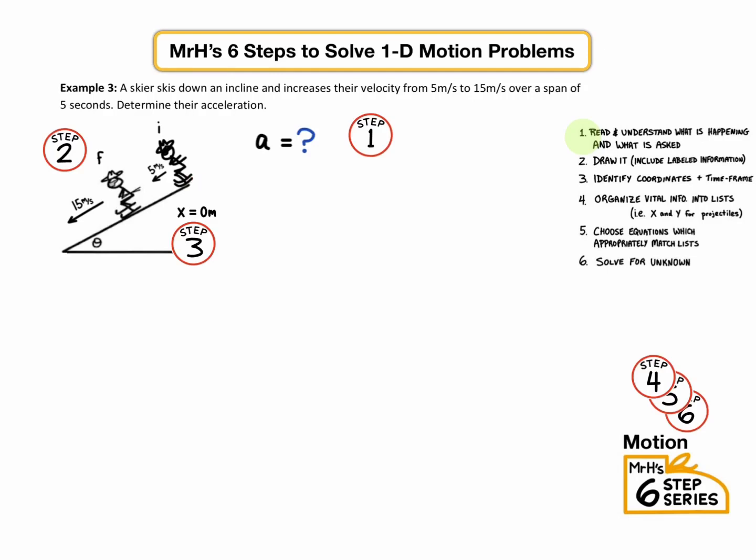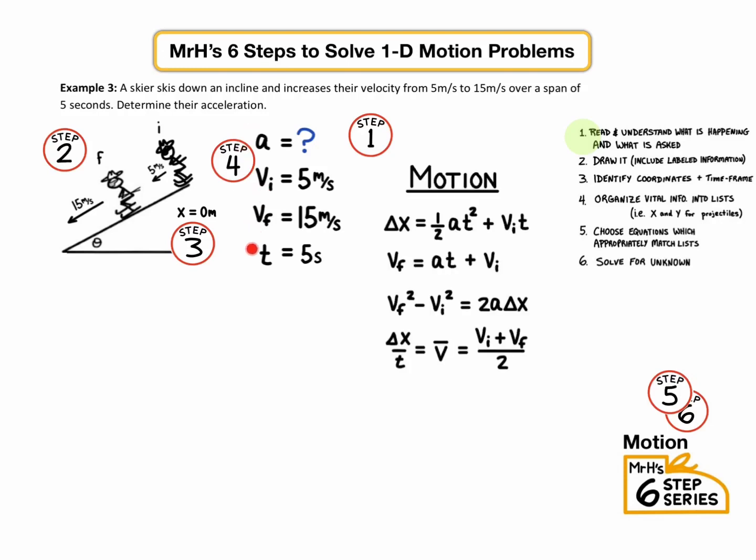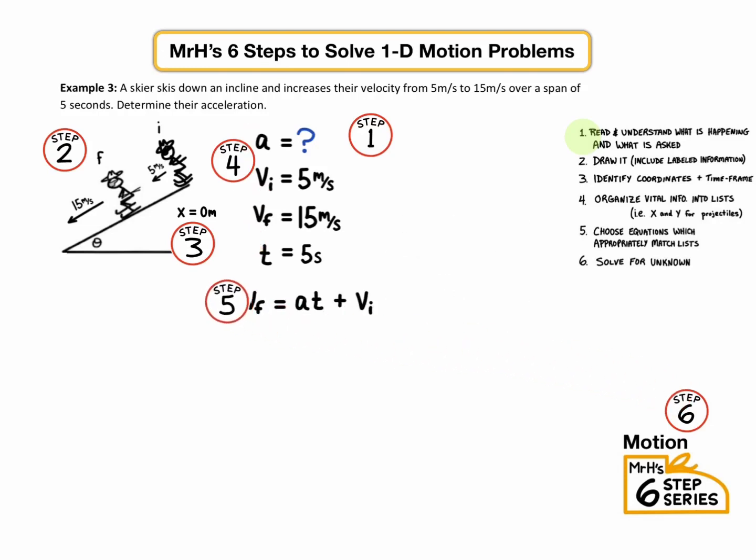Step four, organize your information into a list. Well, they gave us initial velocity five meter per second, final velocity 15 meter per second, and time equals five seconds. So we're going to check. Now for step five, we're going to check the equation sheet to see if we have those variables. Once we've chosen the equation, step six is to solve. We're going to plug in our numbers, and we get two meters per second squared.